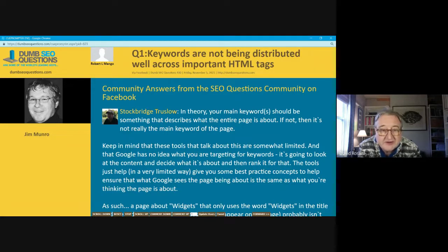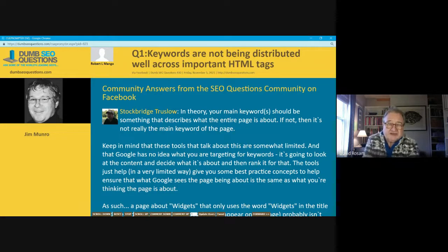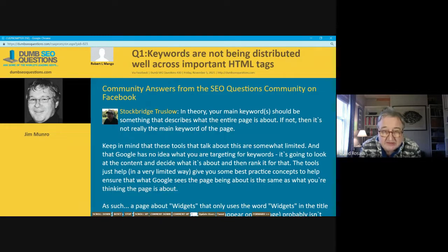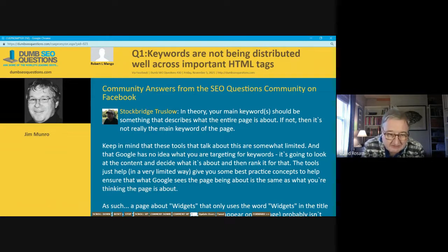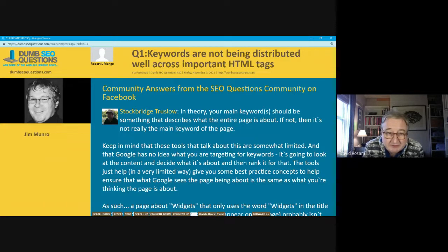Find some related key phrases and put them in your H2s. A lot of these things just happen naturally if you're writing well. If your main keywords are right for your article, you can quite happily forget this error message coming from your SEO tool.